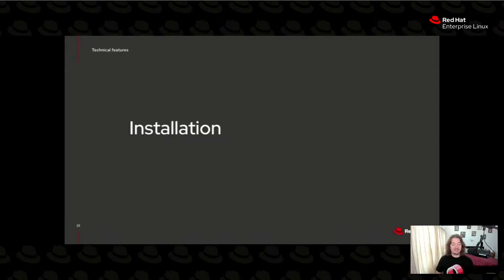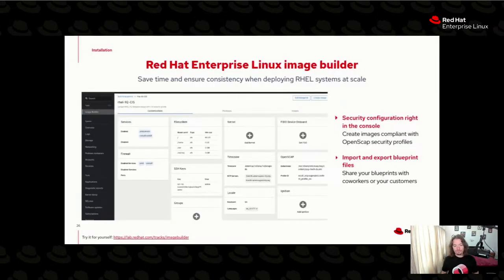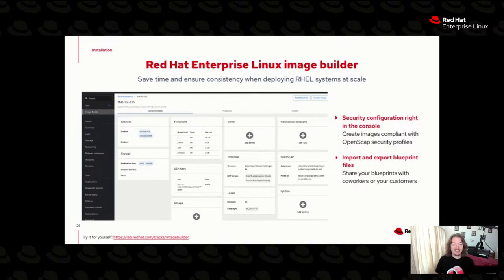Here's the second workflow: using something like Image Builder — one of my favorite tools, an entire portfolio. When you're running Red Hat Enterprise Linux, you can use Image Builder to define what your image looks like. There are three different ways to do this: a command line tool, a web console application, and the console version that's part of the Red Hat Insights suite of tools.